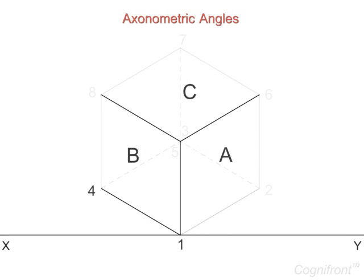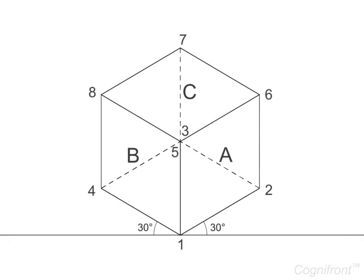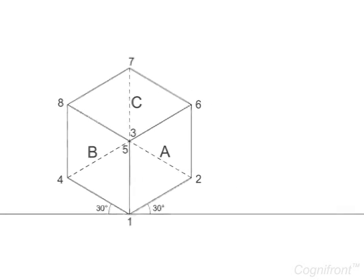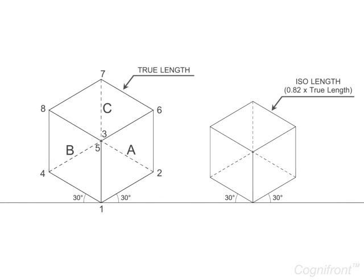The edges 1-4 and 1-2 are parallel to the isometric axis and are drawn at an angle of 30 degrees to line XY. Here, in isometric view, the lengths of the isometric axis are equally foreshortened by 0.82 times their true length. The isometric lines foreshortened by their true length are parallel to the isometric axis, whereas non-isometric lines are not parallel to the isometric axis and they show actual lengths.